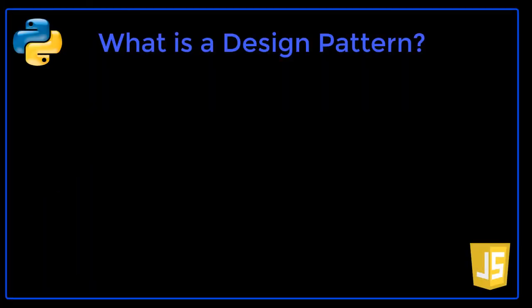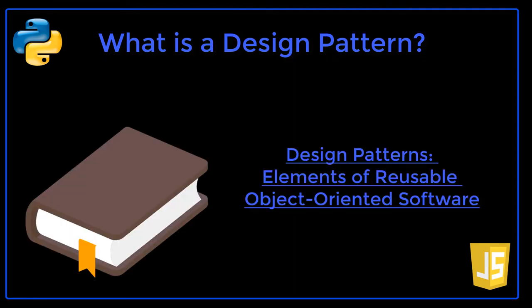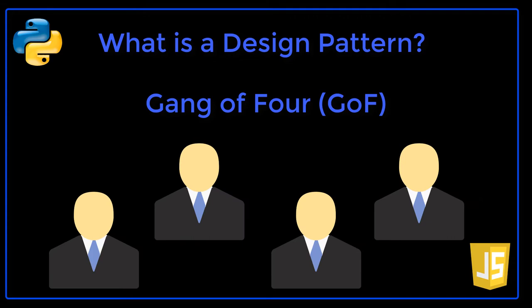In this lecture, we will learn about what design patterns are and who the Gang of Four are. An iconic book, possibly the most important book in all of computer science, called Design Patterns: Elements of Reusable Object-Oriented Software, was published over 20 years ago on October 21st, 1994. There were four authors, all of whom were computer scientists, that have been nicknamed the Gang of Four.